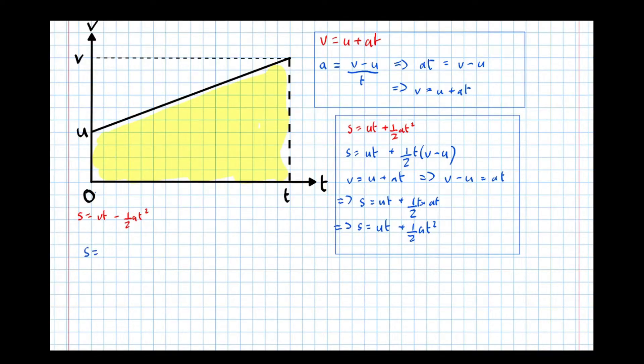So the entire rectangle has height V and base T, so S equals V T. Then if we take out this white triangle here, this side is V minus U and this side is T. So a half base times height. And for similar reasons to before, we know that V minus U is A T. So that means S equals V T minus a half A T times T, or S equals V T minus a half A T squared. And that's that one derived.